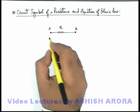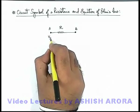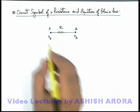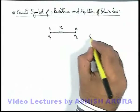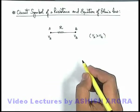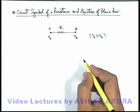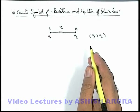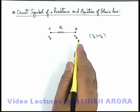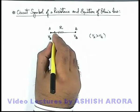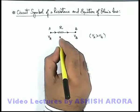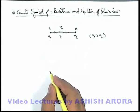Say if at terminal A the potential is V-a and at terminal B the potential is V-b, and V-a is more than V-b. Then we know that current always flows from the high potential end to the low potential end. So in this situation, since V-a is higher than V-b, a current flows through the resistance from terminal A to B, and say the current is i.